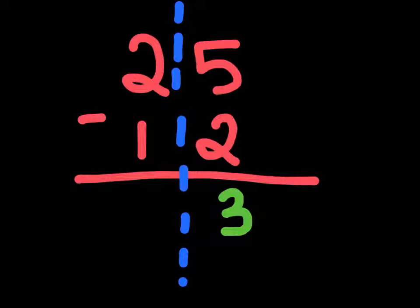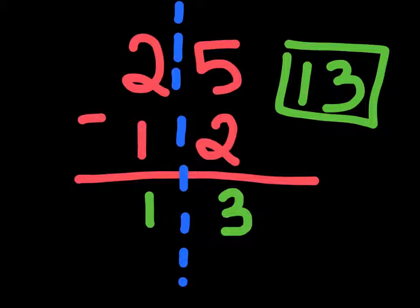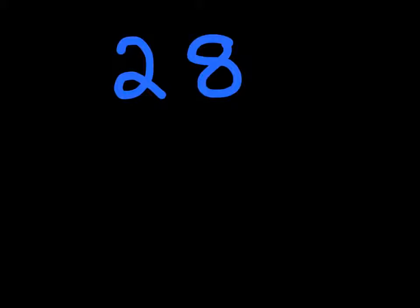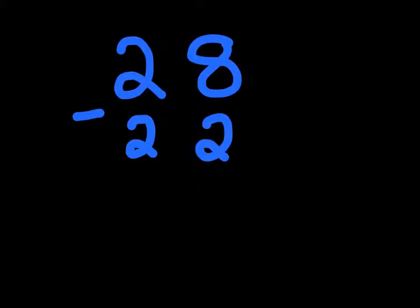The left hand column is just 2 minus 1, and 2 minus 1 is just 1. So our answer to this question is 13.